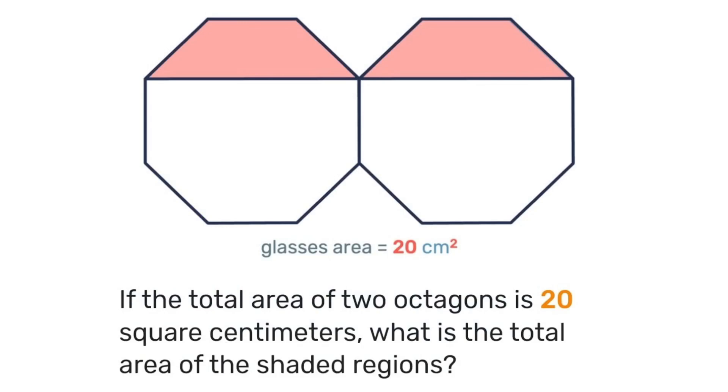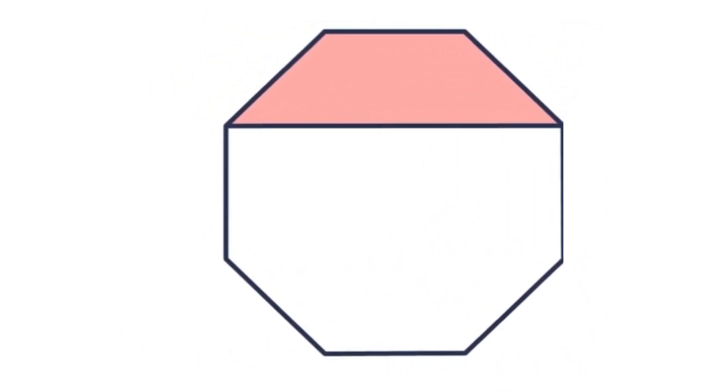Give it a try, pause the video here and see what you come up with. So I'm going to be doing this visually by focusing on one of those octagons. First we're going to make some construction lines dividing the octagon into triangles and squares.